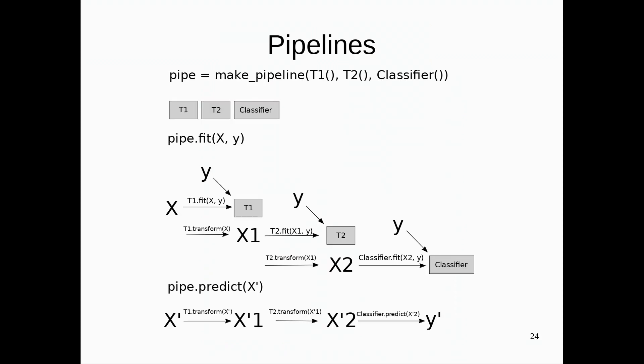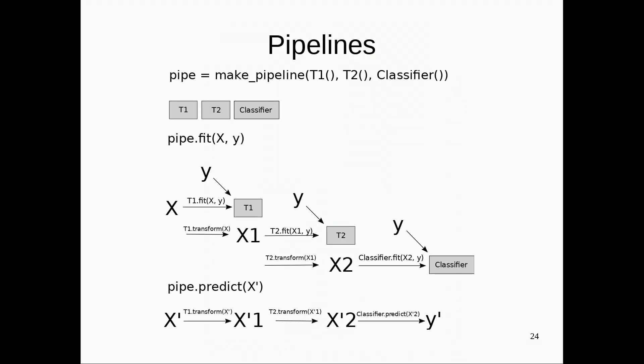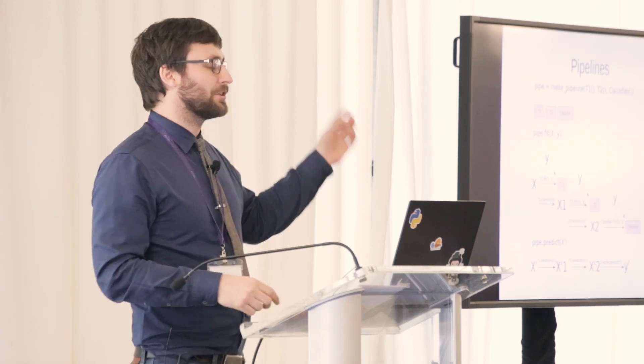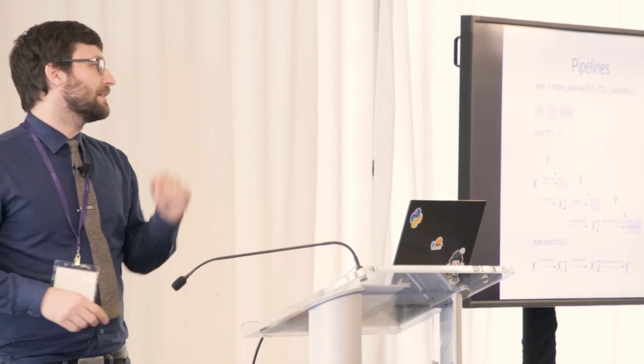To make this very simple, scikit-learn has another thing called pipelines. Pipelines are a way to chain together transformations. I call them here T1 and T2. Think about imputation and PCA or scaling and PCA or whatever you want, and the classifier. And so similar to GridSearchCV, making a pipeline returns a new object that is, again, an estimator, has exactly the same interface as any of the other models. So this pipe object just looks like a model, again. Only now it's a chain of, let's say, two transformations and a classifier.